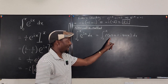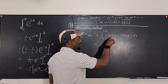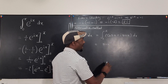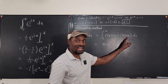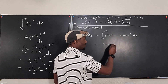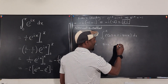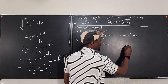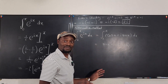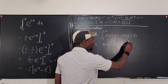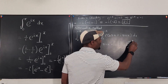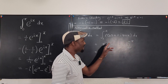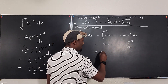Integrating term by term: the integral of cosine x is sine x; the integral of i sine x, where i is a constant, gives i times negative cosine x. So we have sine x minus i cosine x, evaluated from zero to pi.